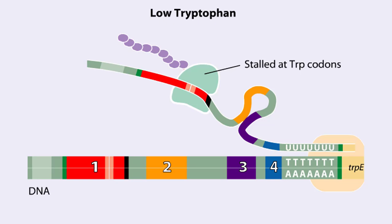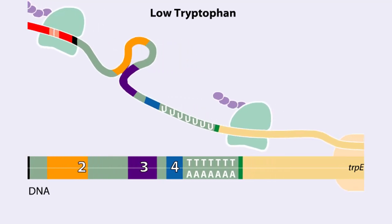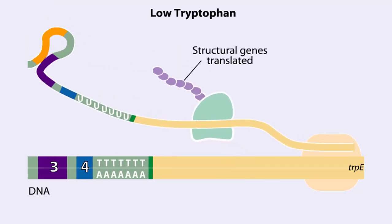Because region 3 is paired with region 2, it cannot pair with region 4 and form an attenuator. Transcription continues. RNA polymerase transcribes the structural genes, which are translated into enzymes, which in turn synthesize more tryptophan.